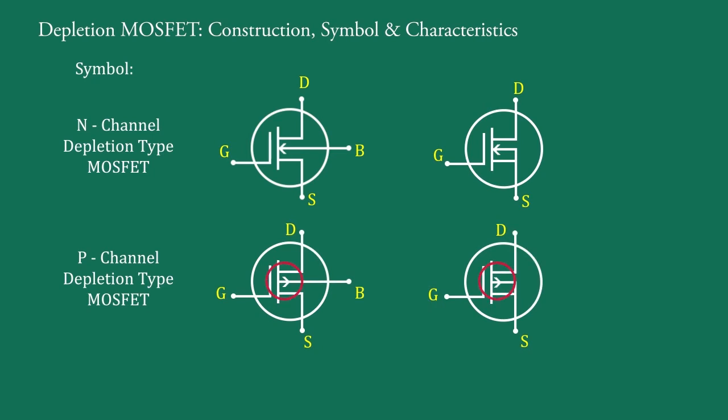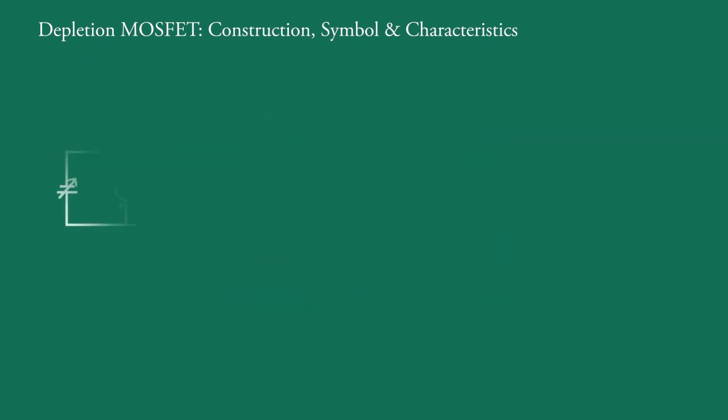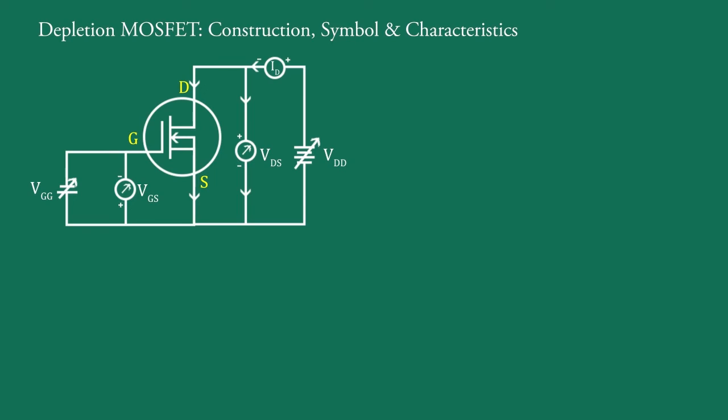Now this is the circuit diagram for static characteristics of N-channel depletion MOSFET. For more clarification of the operation of MOSFET, consider internal structure which is like this.